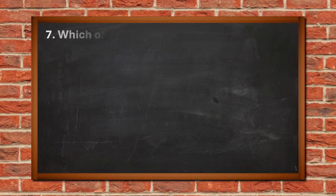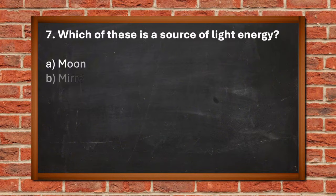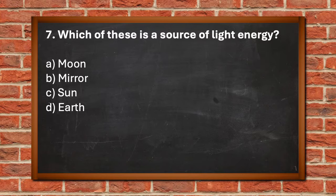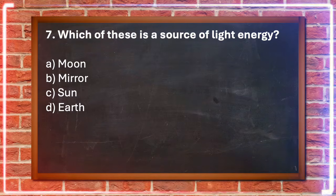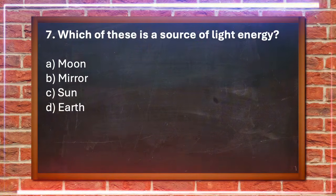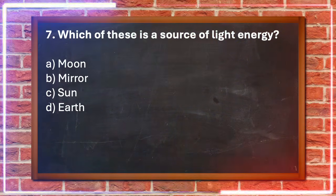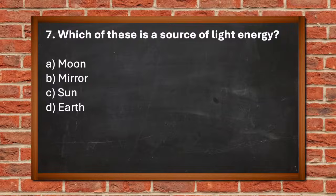Number 7. Which of these is a source of light energy? A. Moon, B. Mirror, C. Sun, D. Earth. The answer is C. Sun.